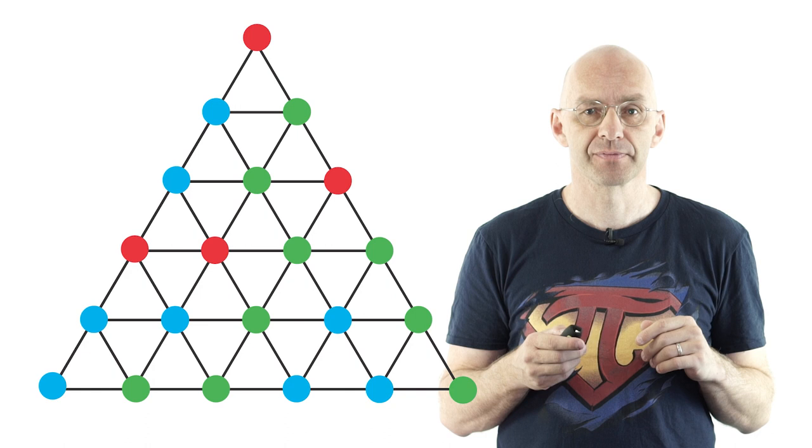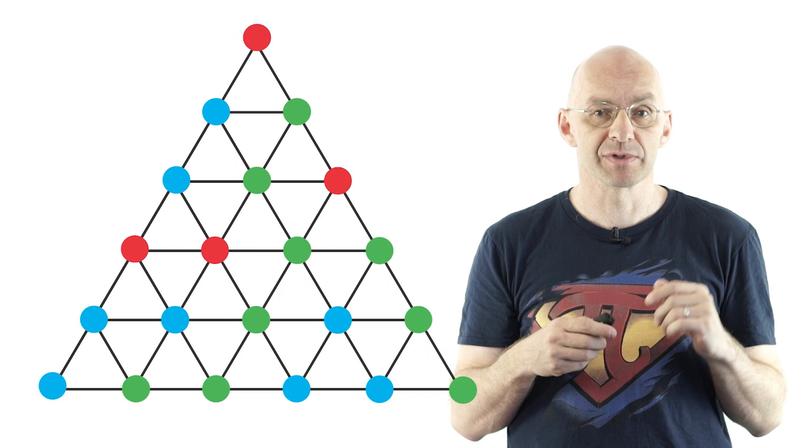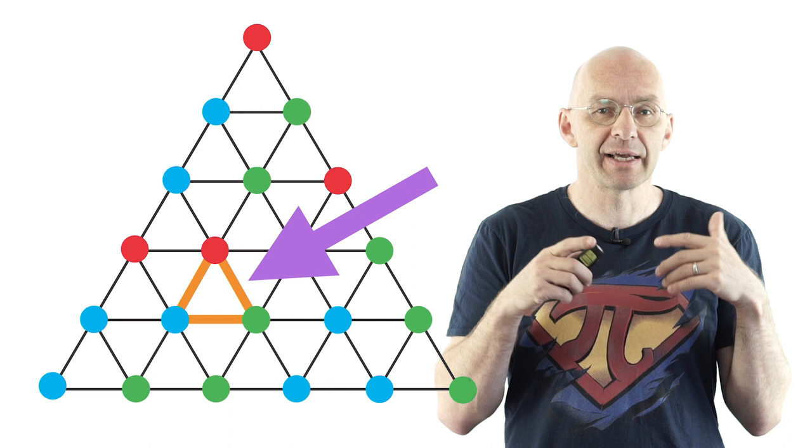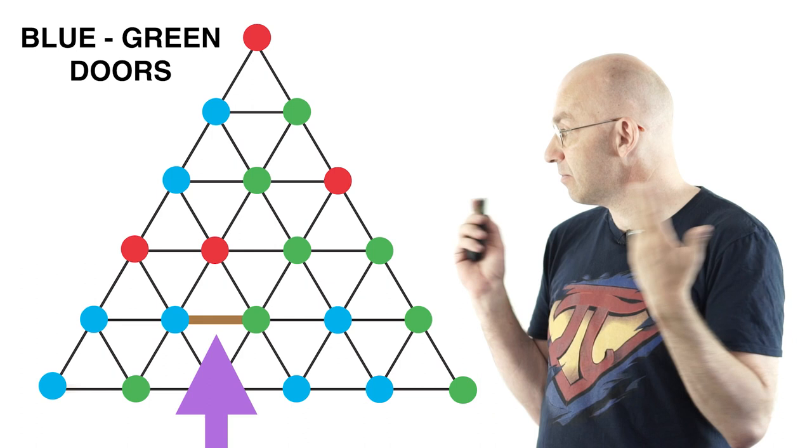So how do you prove something like this? Well there's a really really nice proof. Okay think of this big triangle here as a house with the little triangles being the rooms. Now every room is bounded by three edges. Let's say an edge is a door if its two ends are colored blue and green like that one here. Now there's lots of doors in here so let's just highlight all of them. So here they are.